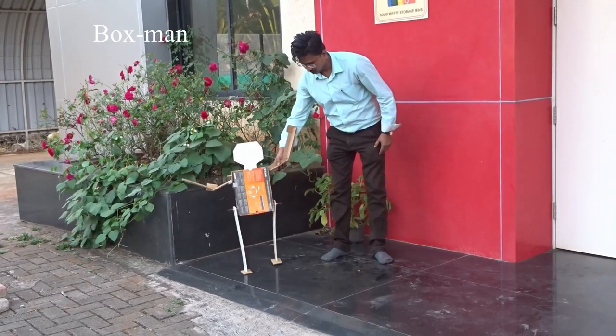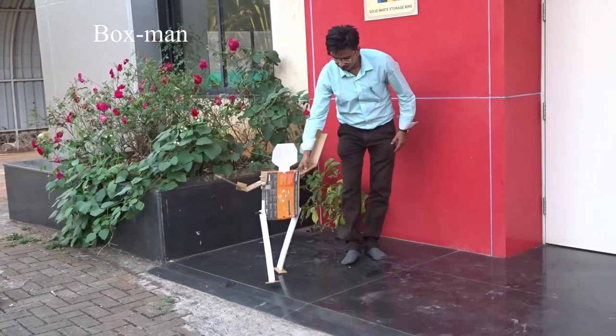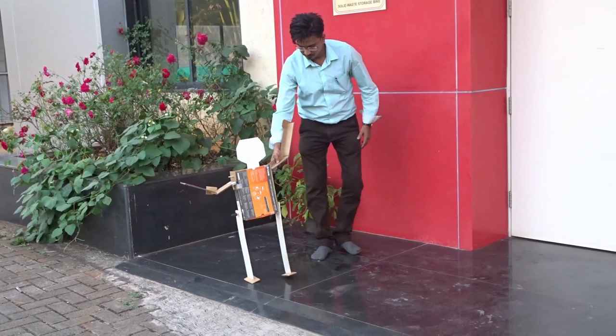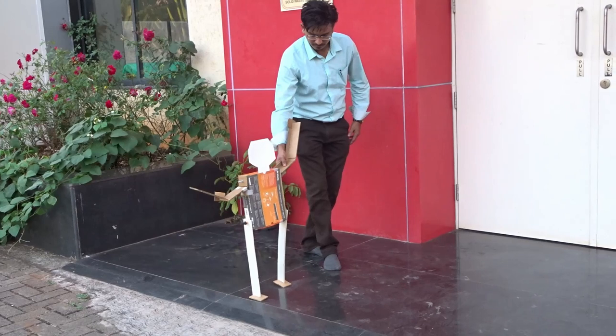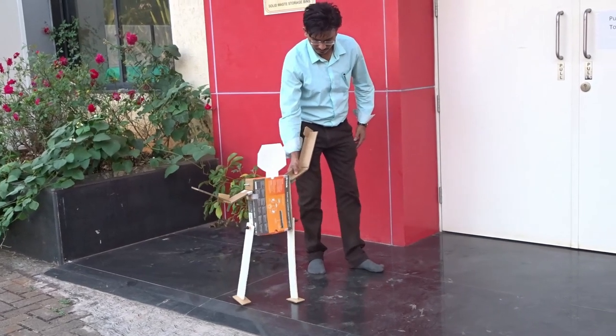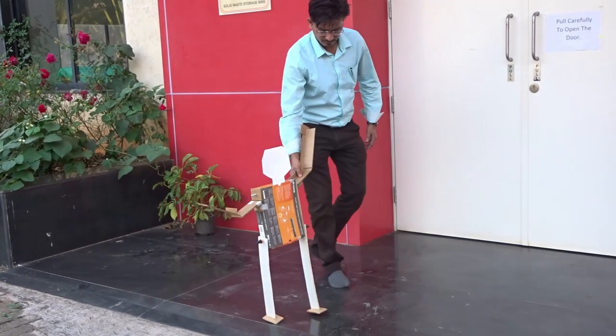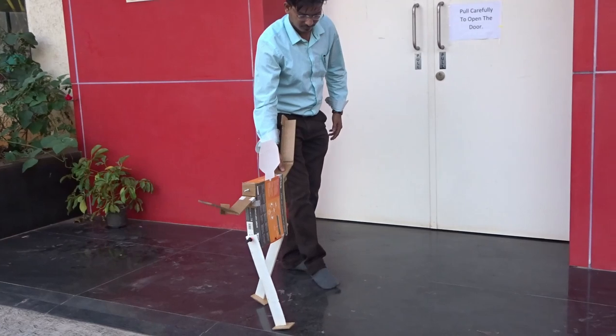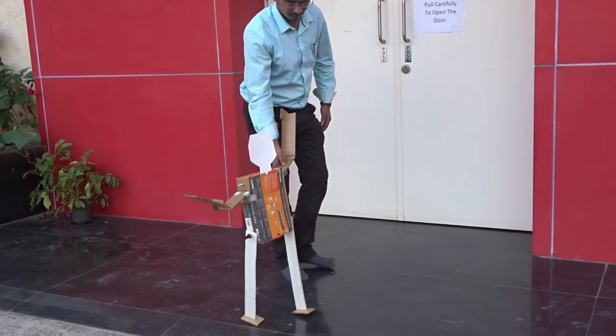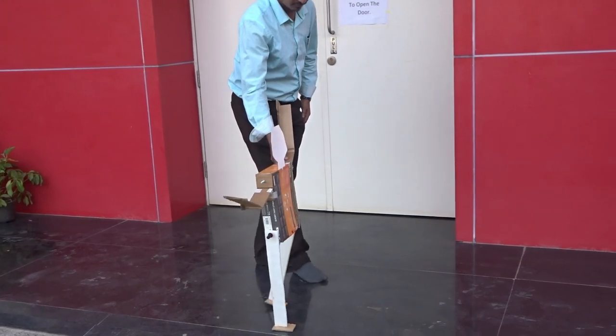And here is a box man. For making of the box man, such trash boxes and some foam strips are used. This box man can walk also. Look at this movement. Isn't it fun to see such beautiful toys made from trash which have huge hidden science in it?